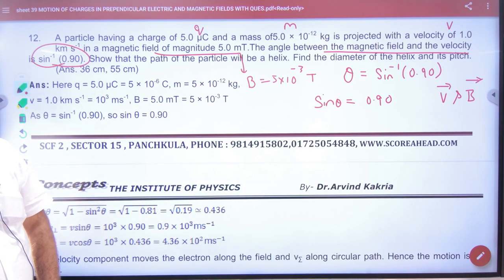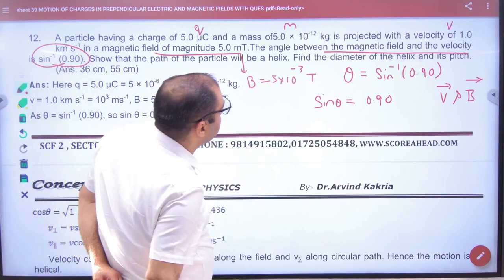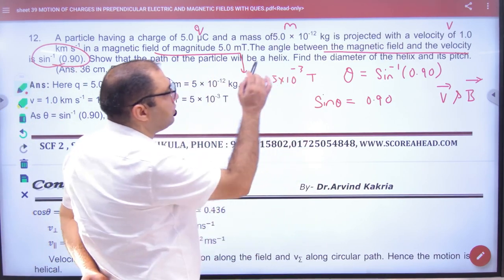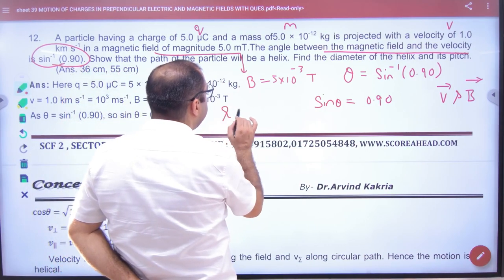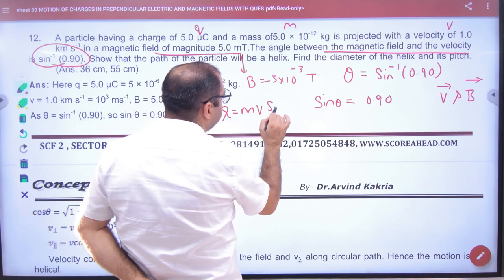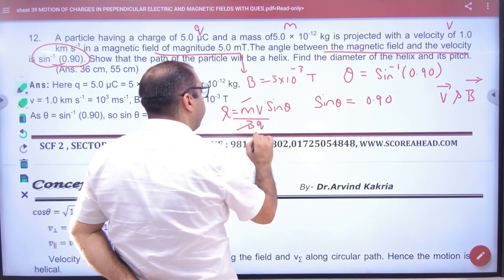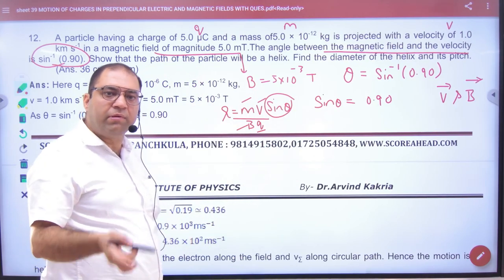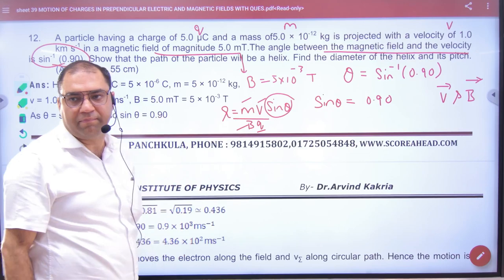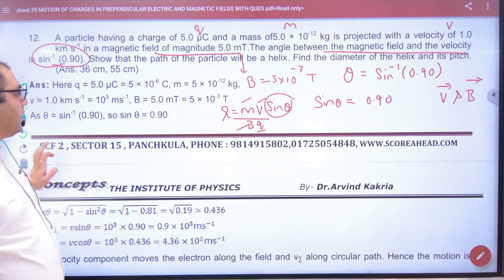What is asking? Find the diameter of the helix. The radius formula is r = mv sin theta divided by Bq. All values are given including sin theta. We calculate radius and double it to get diameter - that's the first part.